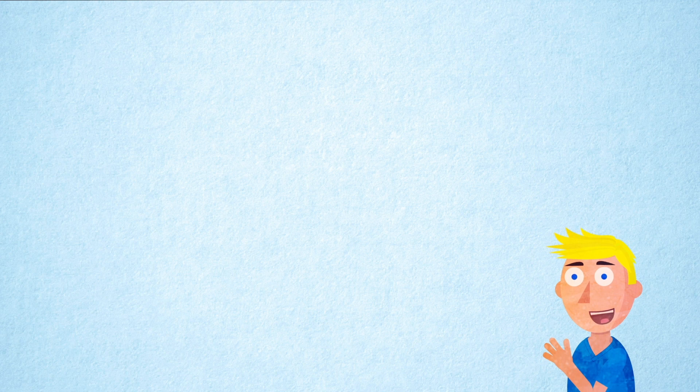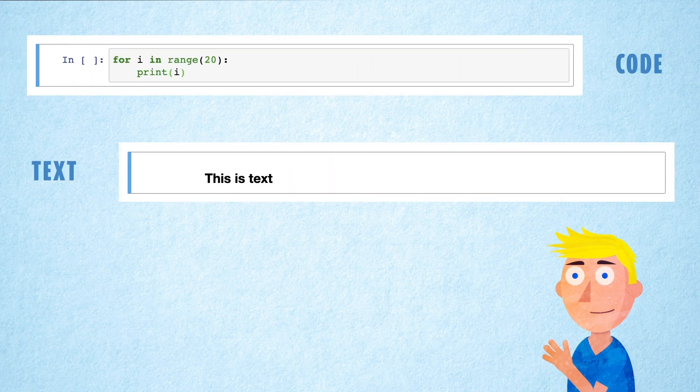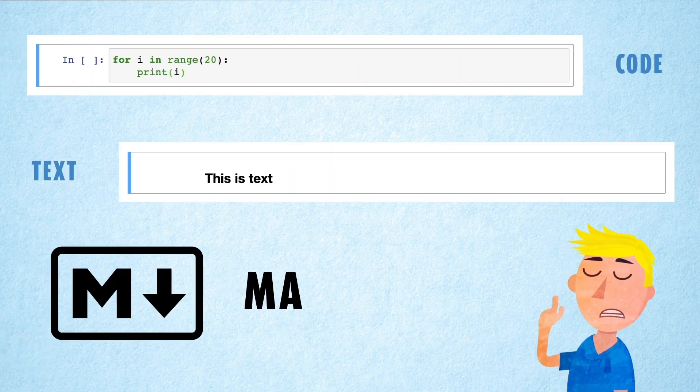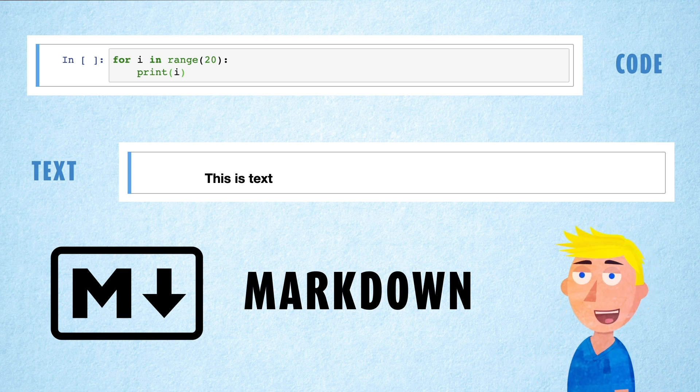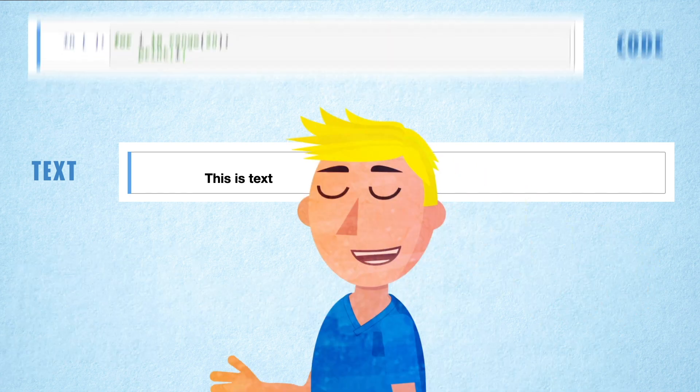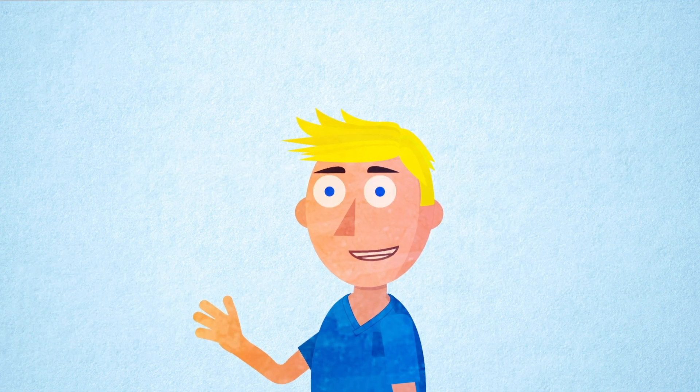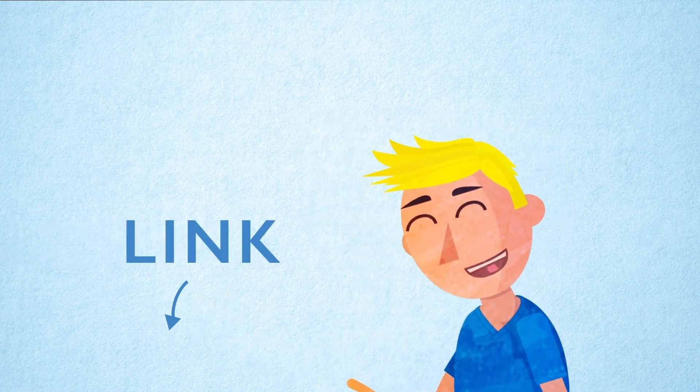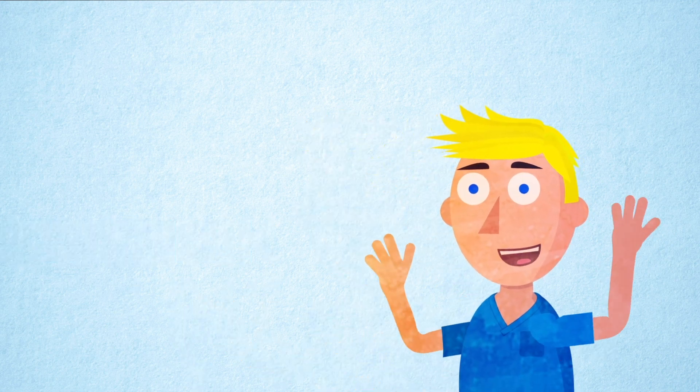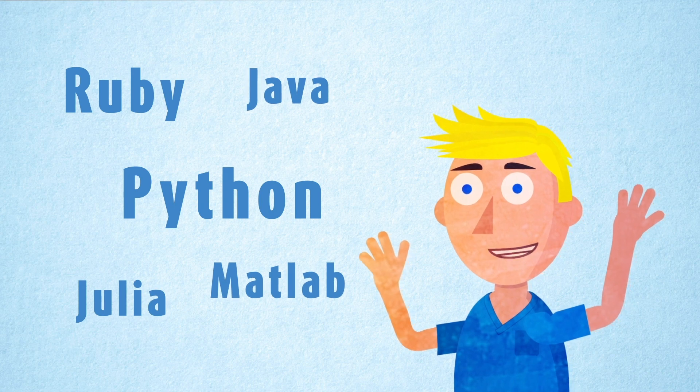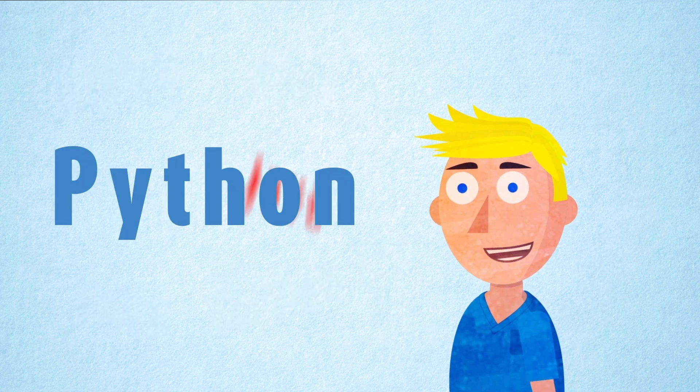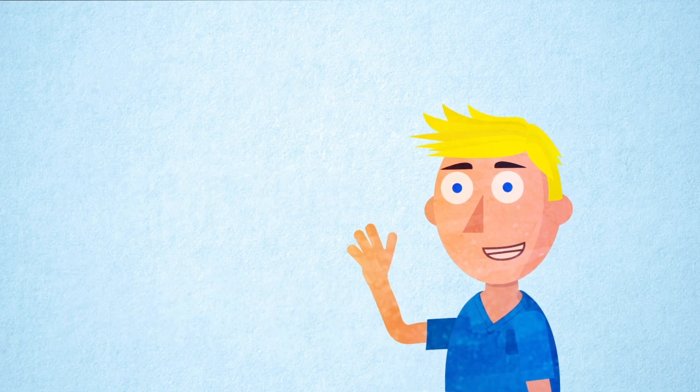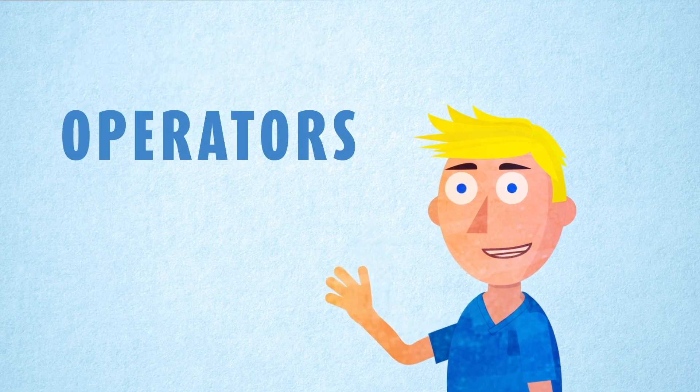Jupyter Notebooks are split into cells that can contain both code and text. Text is written as Markdown. If you don't know what that is don't worry it's just a way of formatting text online. You don't need to know it for these tutorials but if you are interested I'll include a link in the description. The code in a notebook can be in loads of different languages but as we started a Python notebook here the code has to be in Python. Okay so let's get started with some basic operators in Python.